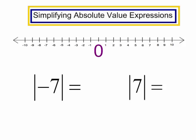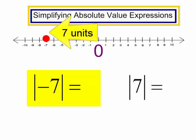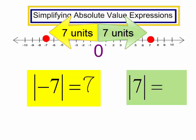What is the absolute value of negative 7? Here is the number line, and here is 0, and here is negative 7. That is 7 units from 0 on the number line, so the absolute value of negative 7 is 7. What does the absolute value of 7 equal? Looking at 7 on the number line, it is 7 units from 0, so the absolute value of 7 is 7.